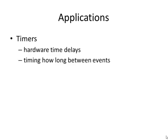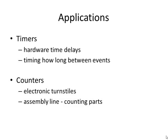We might also want to time how long it is between two events. For counters, one of the more common applications is electronic turnstiles. If you've been to a concert or sporting event, you might have gone through a turnstile — that's a big wheel that counts how many people have gone in. On an assembly line, we often have to count parts going by; after 24 parts go by, it might want to do something else. So we can use counters for that application as well.